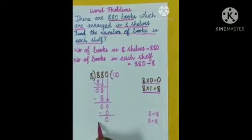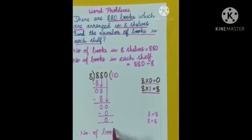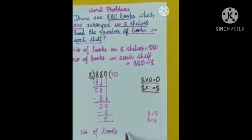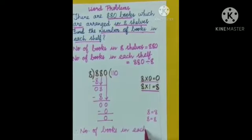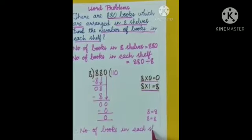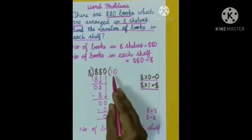Now let us write the final statement. Therefore, the number of books in each shelf is equal to 110.